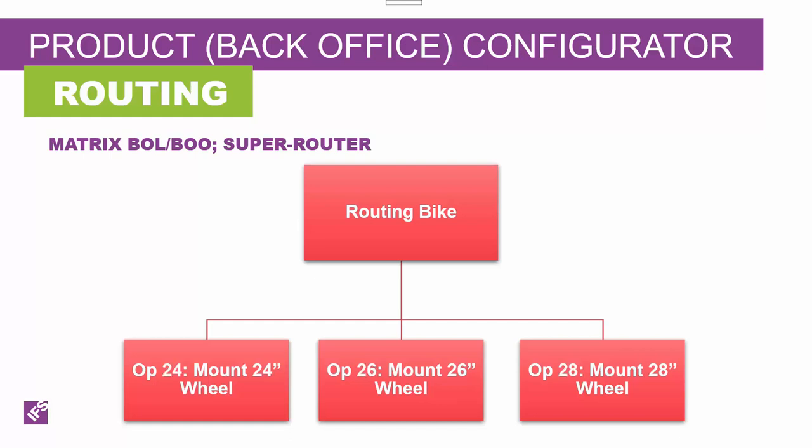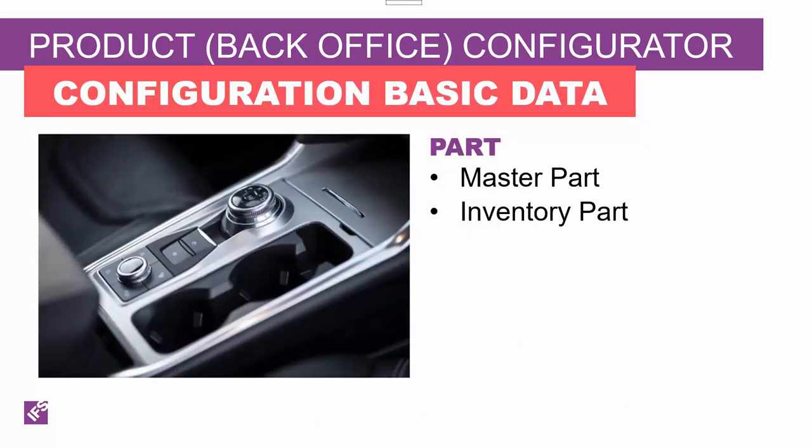One capability offered in the product configurator is to adjust certain fields. Note that instead of the operation always being numbered 10 regardless of wheel diameter, the operation number in this case reflects the wheel diameter. For configured-to-order products regularly offered in a catalog, you create a master part and an inventory part. One major reason to deploy a product configurator is to reduce or eliminate the proliferation of part numbers, product structures, and routing data. With proper product structures, routings, and rules, a single part and a single configuration structure can correctly represent how to make multiple variations.